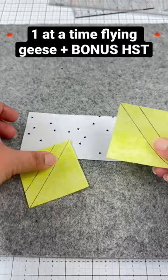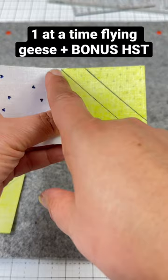Then when you place your block on your rectangle, you'll not only sew on this line, but you'll sew this line as well.